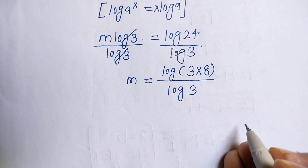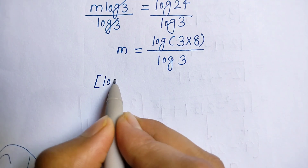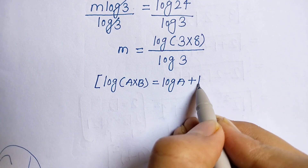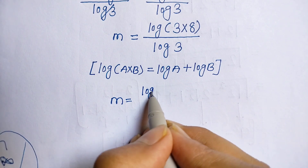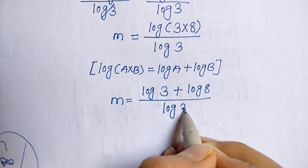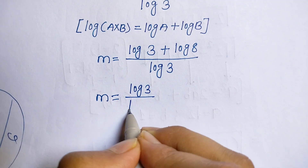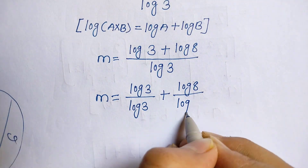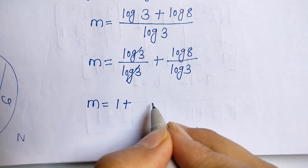We know the product rule of log. Applying it, log of 3 times 8 becomes log 3 plus log 8, all divided by log 3. So m is equal to log 3 divided by log 3, plus log 8 divided by log 3. Log 3 over log 3 cancels, leaving 1 plus log 8 over log 3.